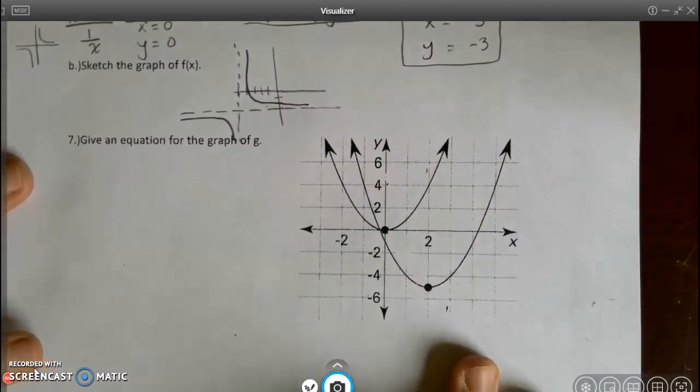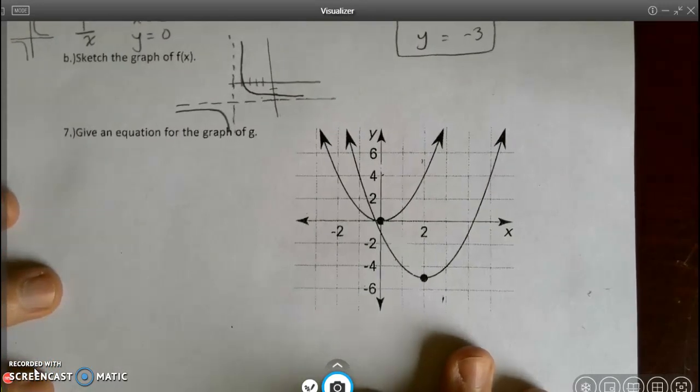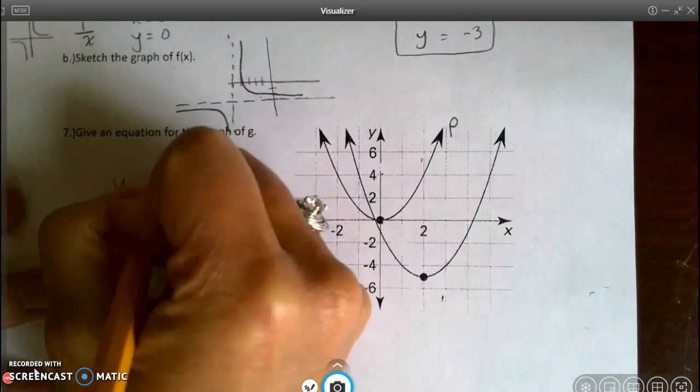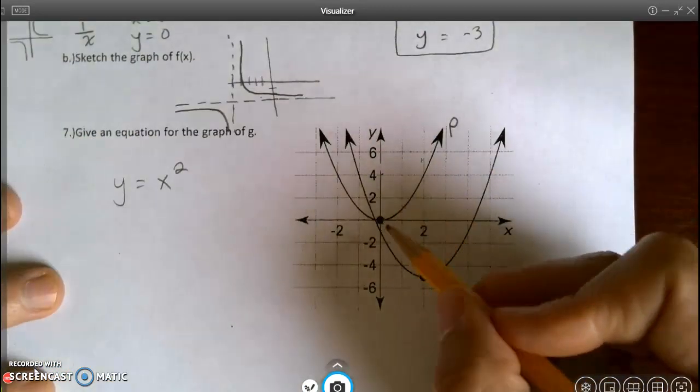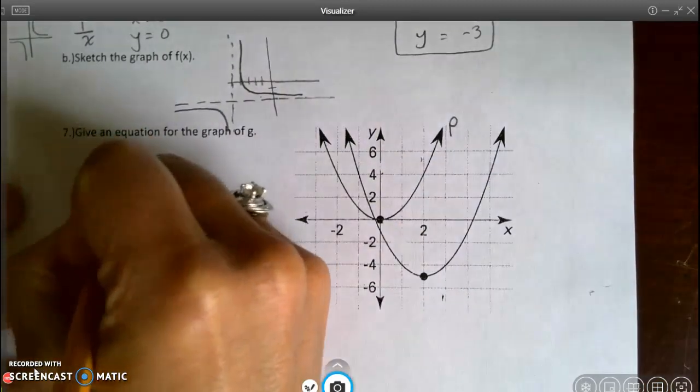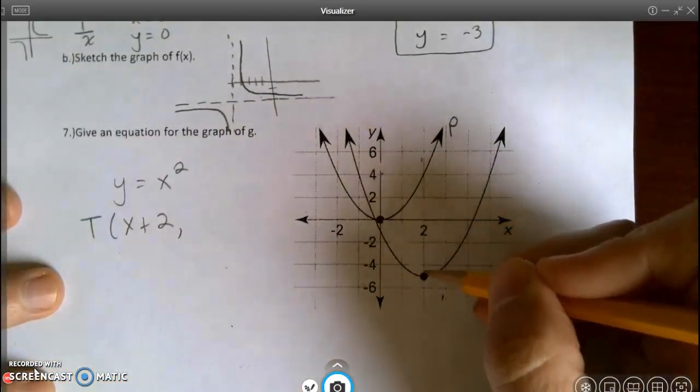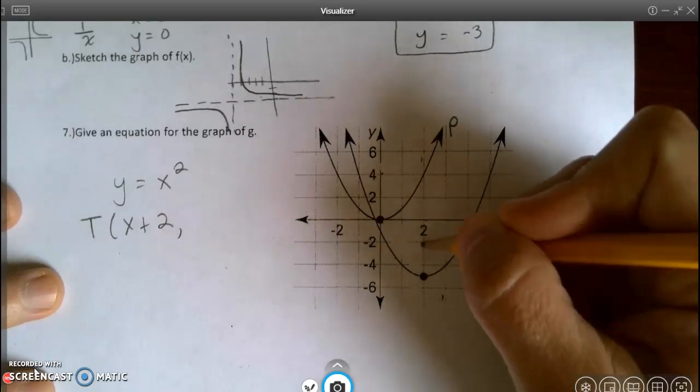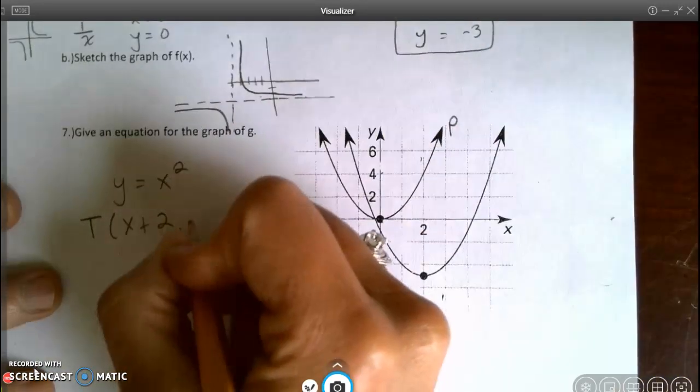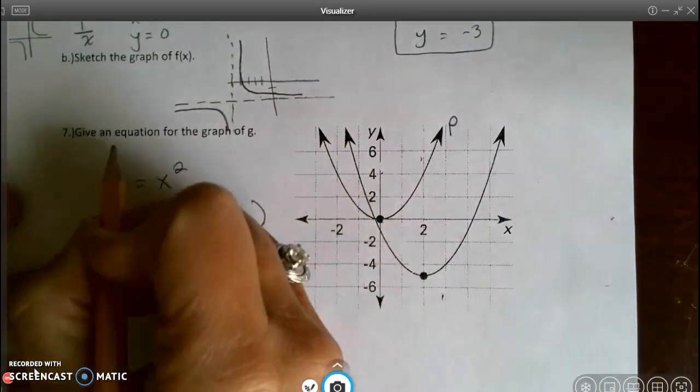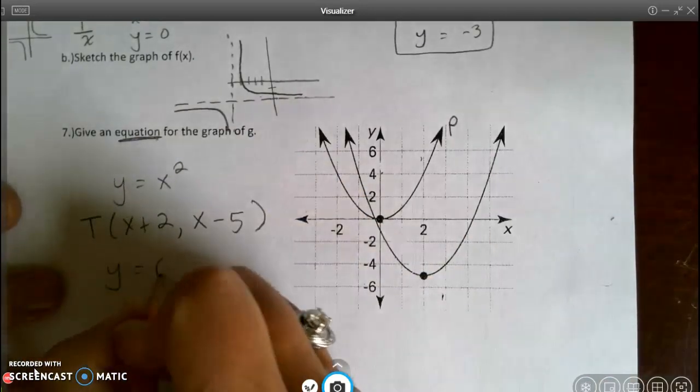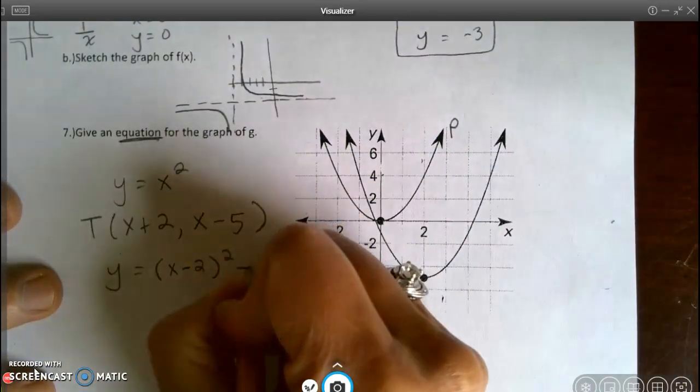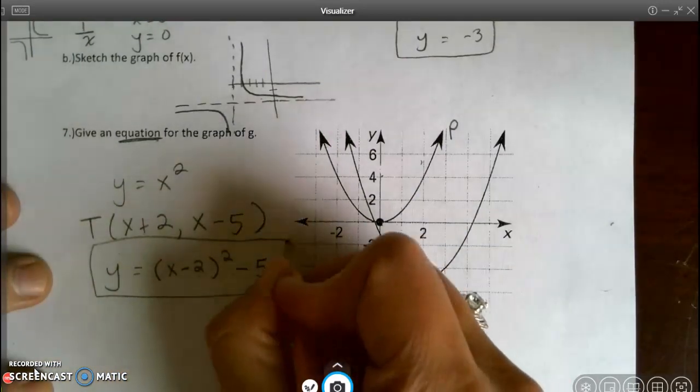For number 7, it says give an equation for the graph of g. I'm assuming this was supposed to be my parent function, which we know is y equals x squared. And I look at my new function, and I am moved over to the right 2. The rule always tells the truth, and then down. We are counting by 1, 2. This must be negative 5, because if this is negative 2, negative 4, that's negative 6. This must be negative 5, so x minus 5. That's my translation rule. So my equation is going to be y equals (x minus 2) squared minus 5, because in the equation x lies, but y tells the truth. That is my final answer for my equation.